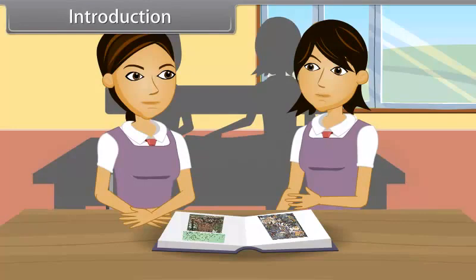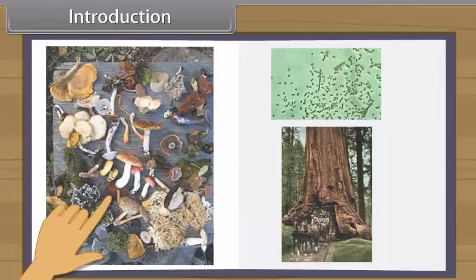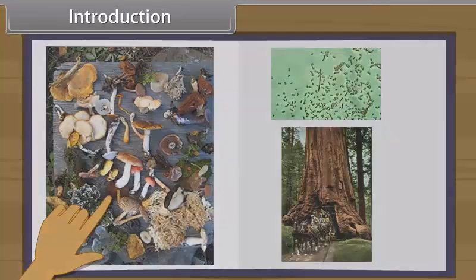We all see a wide variety of plants and animals around us. Do you know, Shruti, there are more than 1 million species of animals around the whole earth and about half a million species of plants on earth.